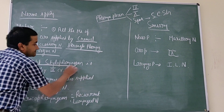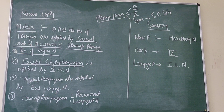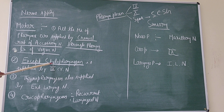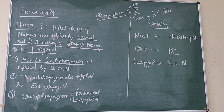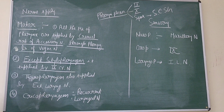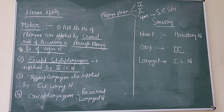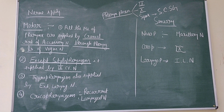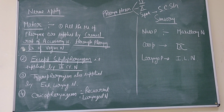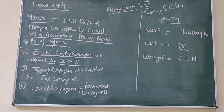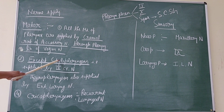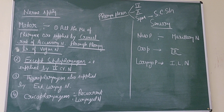Except for stylopharyngeus — all the muscles are supplied through the pharyngeal plexus. Stylopharyngeus, which is one of the longitudinal muscles, is separately supplied by the 9th cranial nerve, that is the glossopharyngeal nerve.